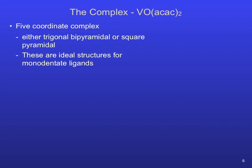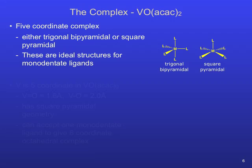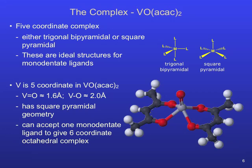VO-bis-ac-ac is a 5-coordinate transition metal complex. Two structural geometries that have 5 bonded electron pairs surrounding a central atom are trigonal bipyramidal and square pyramidal. The structure of the VO-bis-ac-ac complex is square pyramidal. There are two distinct vanadium-oxygen bond lengths in this complex.